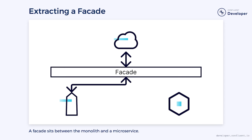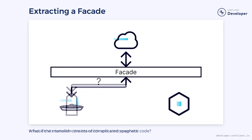One of the biggest challenges of the Strangler Fig pattern is that it relies on being able to build the facade. Legacy systems often exist as a complex tangle of dependencies reaching deep into the database. Extracting a clean facade may be a long and difficult task of slowly untangling those dependencies.